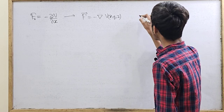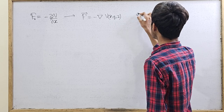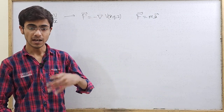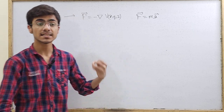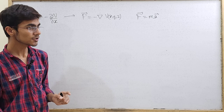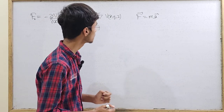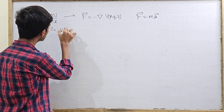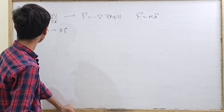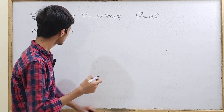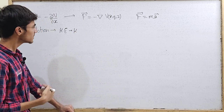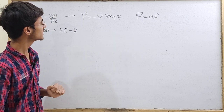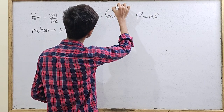Rather than looking at the world in terms of F equals MA, we can describe the motion of an object by how fast it is moving. You associate a number with that speed — that is kinetic energy. So the motion of the object can be represented by kinetic energy, which we write as K. What about the change in motion? Well, a change in motion is caused by forces, and forces can be represented in terms of potential energies. So a change in motion can be represented in terms of potential energy.